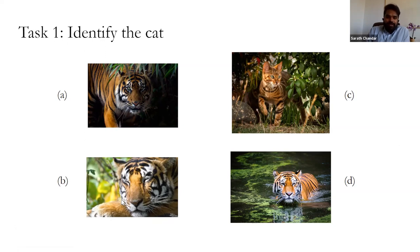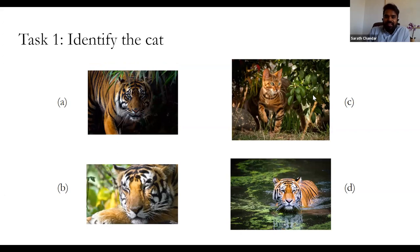I'll stop the poll and share the results. This was an easy task — 91% of you answered that option C is the cat. There are a few people who said A or B is a cat, and I'm not sure if it was for fun or genuine confusion.